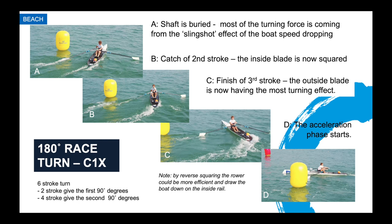I've got some nice stills here rounding the top buoy. In shot A, his inside oar is shafted — you can see the cavitation or the waves coming back off the top of it, and his boat speed is dropping as he slows it using the inside oar. Shot B is the catch of the second stroke — you can see he's just taking that second stroke, clearly buried that oar, with his hands on his chest and lots of space to take that stroke.